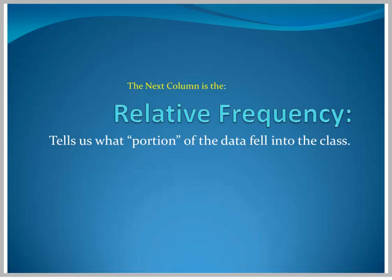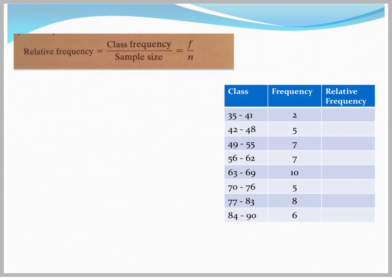The next column is the relative frequency column. This column tells us what portion of the data fell into the class. This is your percentage column. The relative frequency is found by taking the frequency of pieces of data that fell into each class, and dividing that by the sample size. So it's the portion.